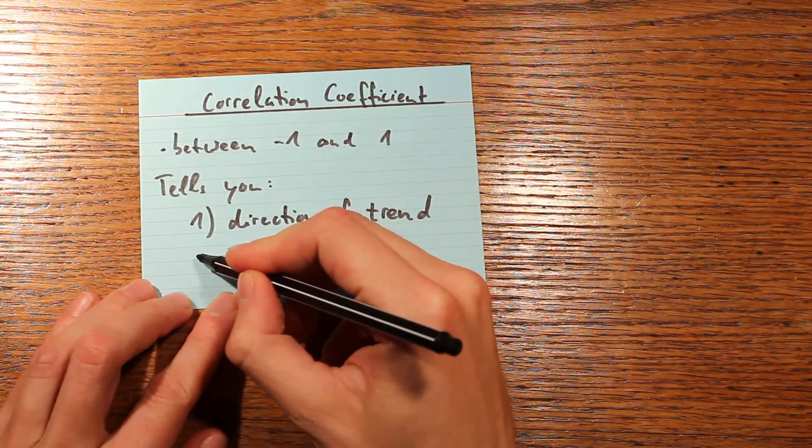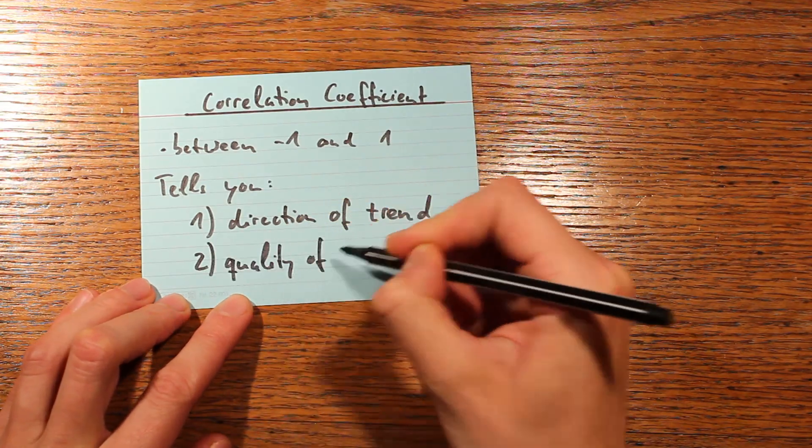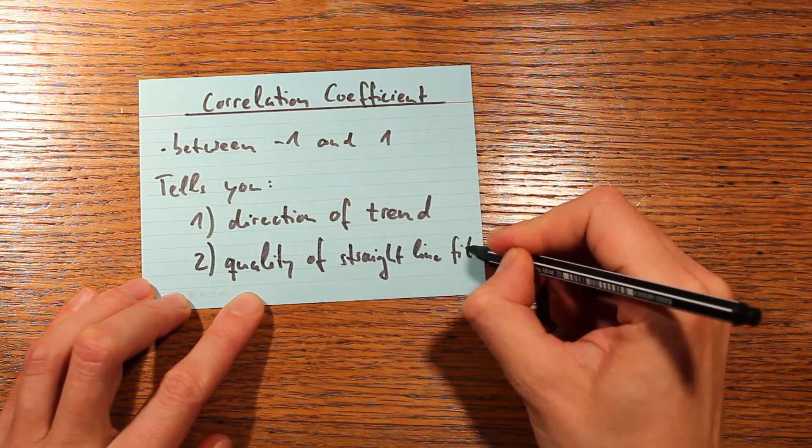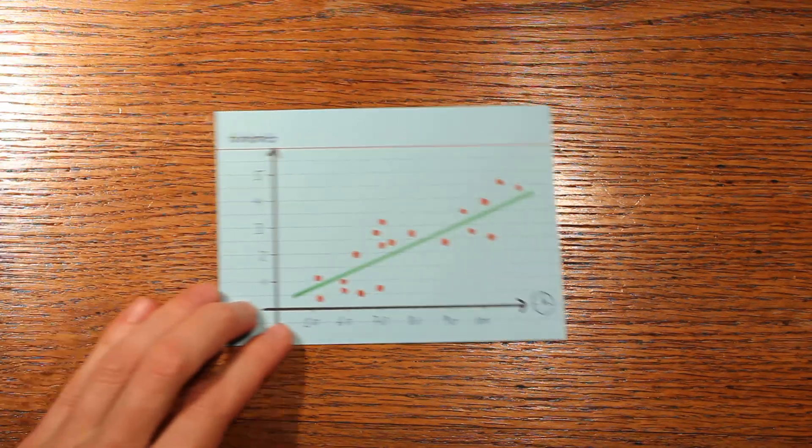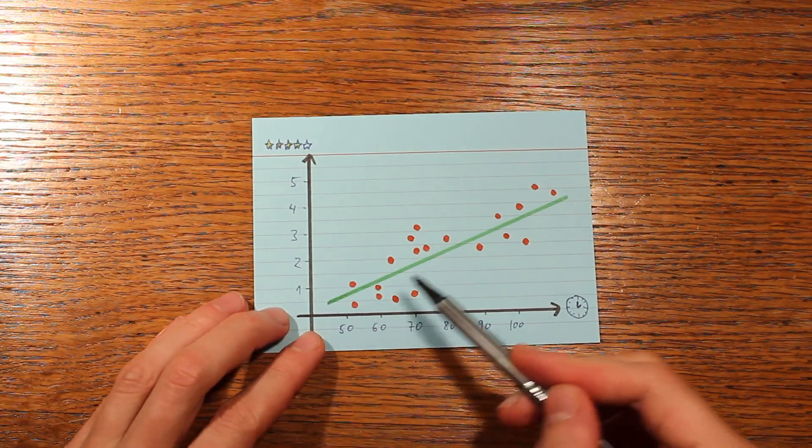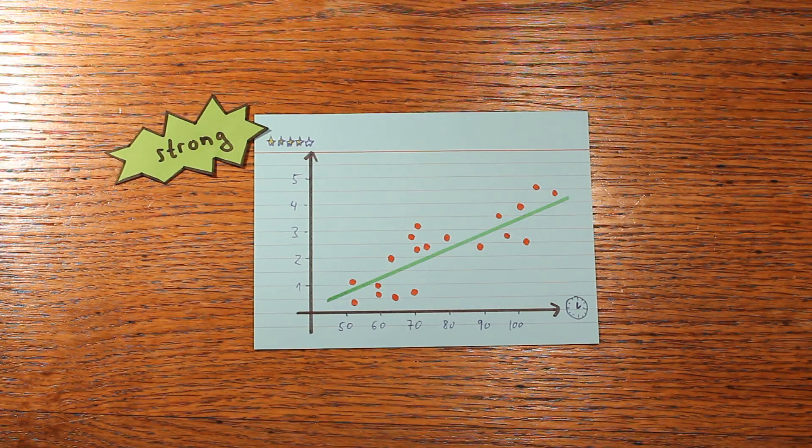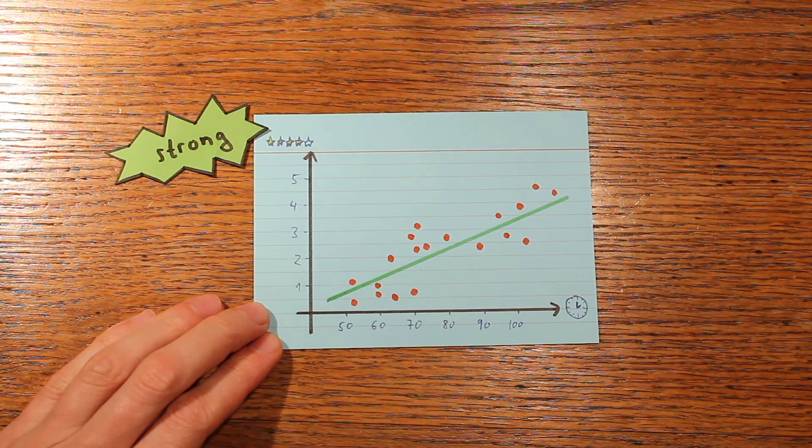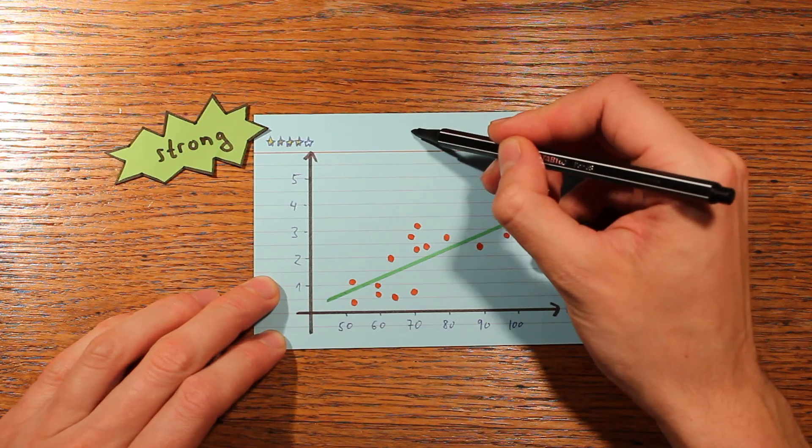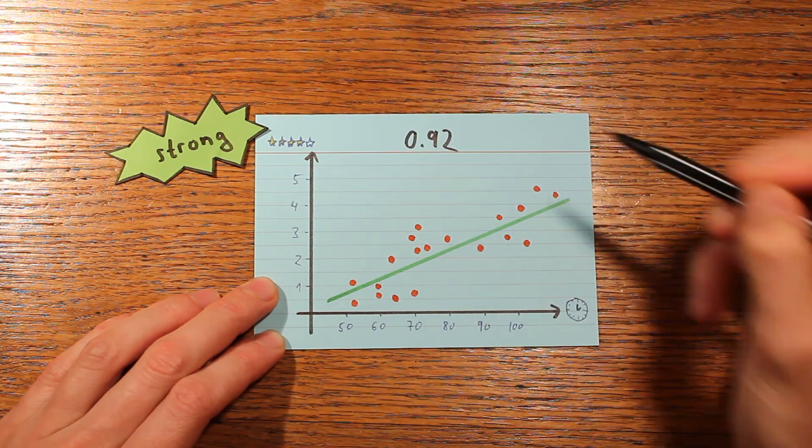And the second thing the correlation coefficient tells you is, how good would a straight line be at describing your data? For example, in this plot all the points lie really close to a straight line. And in that case we'd say that the correlation is strong. This slope is positive, so it's a positive correlation, and the coefficient turns actually out to be 0.92 in this case. And that's really big.